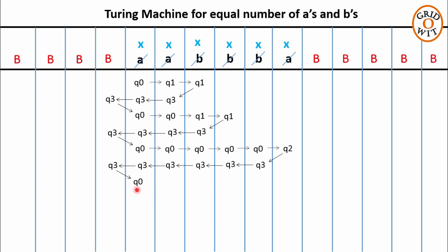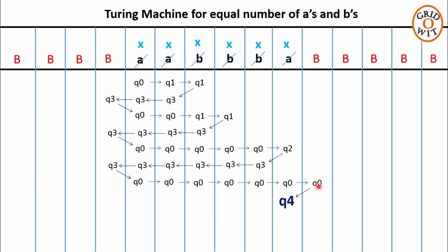So it takes the right move and changes its state to q0. Now in the next iteration, q0 will skip all these Xs, move towards the right searching for either A or B. But this time q0 will reach the blank symbol, which signifies that while iterating and replacing pairs of AB with X, all the symbols are converted to X — which means the number of As are equal to the number of Bs because they are depleted together. So the string AABBBA should be accepted. So q0 on reading the blank symbol will change its state to final state q4 and take a left move. Once you have changed the state to final state, the string will be accepted.